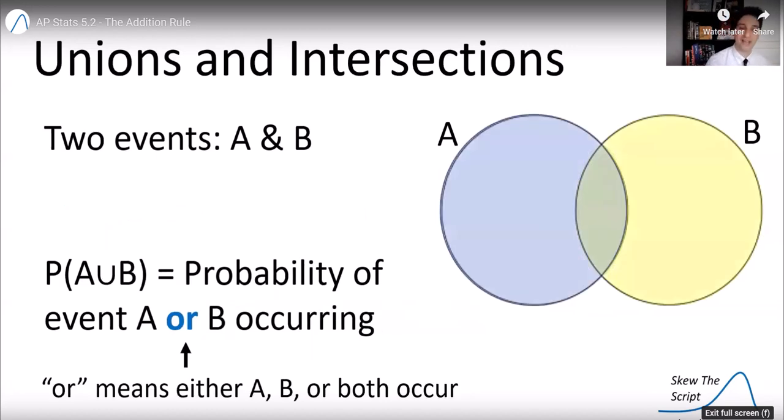OR also has a specific definition and it's symbolized by that right side up U. P(A or B), the probability event A or event B occurring means that either A happened or B happened or both. So it could be one or the other or both. It's inclusive of all those possibilities. This is the union of events A and B. So AND is only when they both occur. OR is one, the other, or both, inclusive of all those.